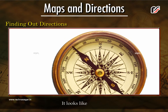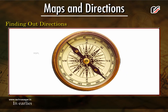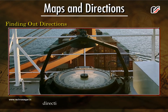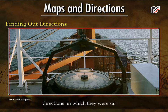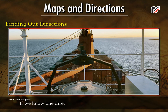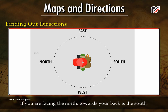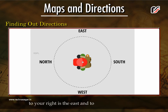The compass has a needle which always points to the north. It looks like a watch. In earlier times, the sailors used this compass to find out the directions in which they were sailing. If we know one direction, we can find out the others easily. If you are facing the north, towards your back is the south, to your right is the east, and to your left is the west.